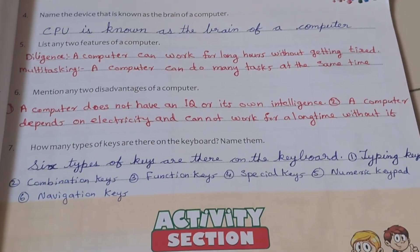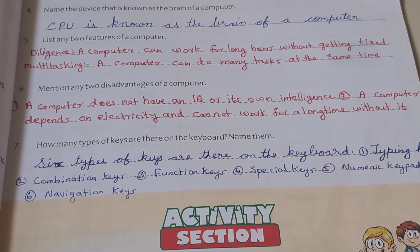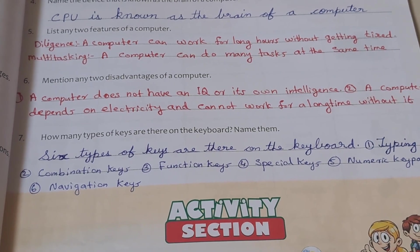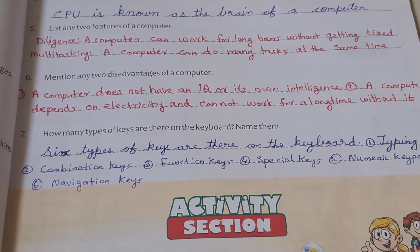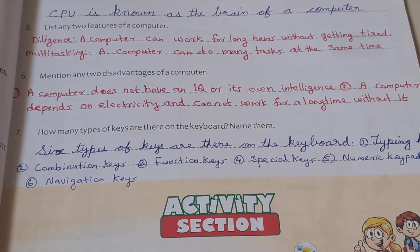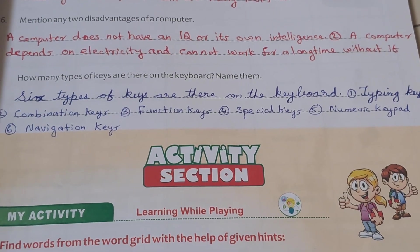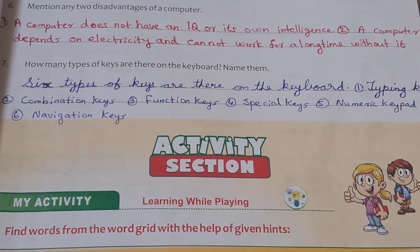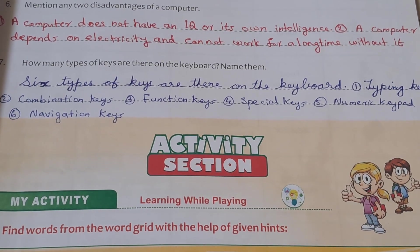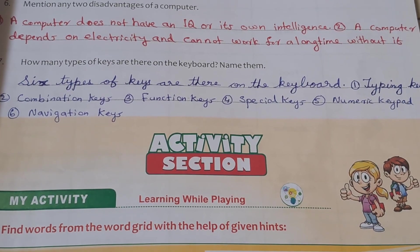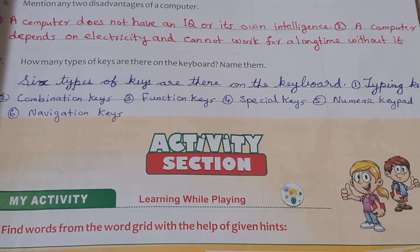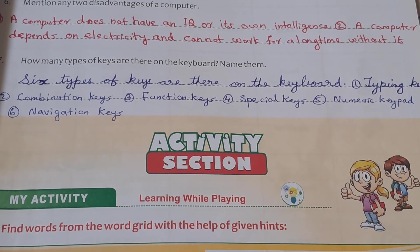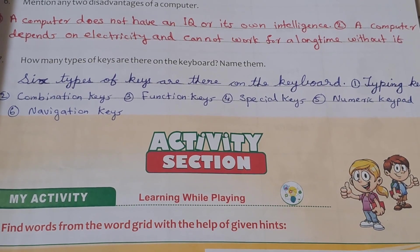Question 7: How many types of keys are there on a keyboard? Name them. Answer: There are six types of keys on the keyboard. First: typing keys. Second: combination keys. Third: function keys. Fourth: special keys. Fifth: numeric keypad. Sixth: navigation keys.